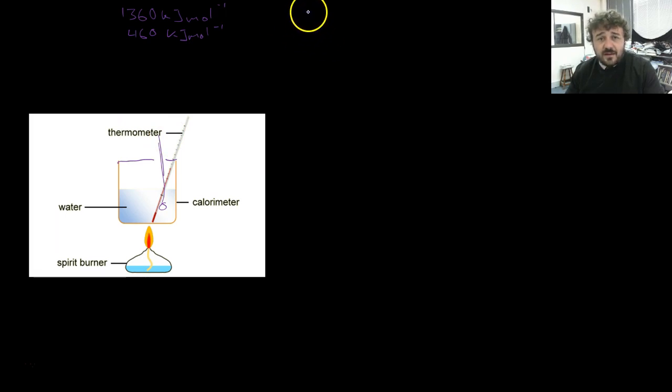So why do we get that? Well, there are several sources of error. One: heat is lost to the environment, and the reason this happens is that in a perfect world the heat would all go directly into here, but it doesn't.